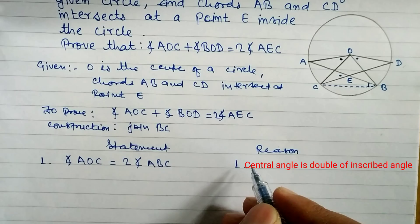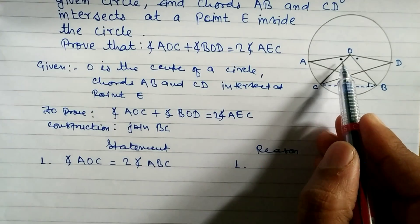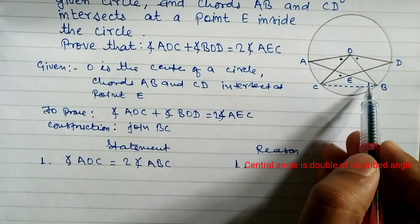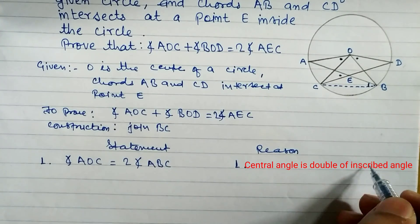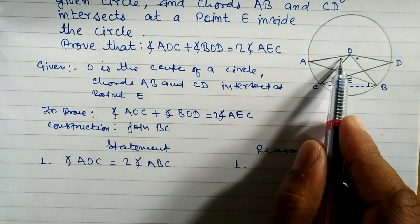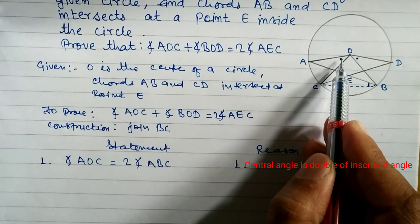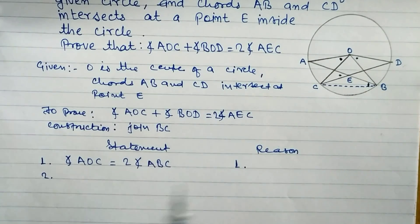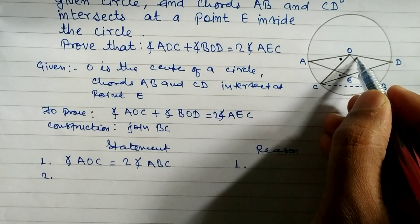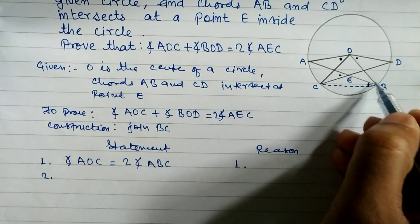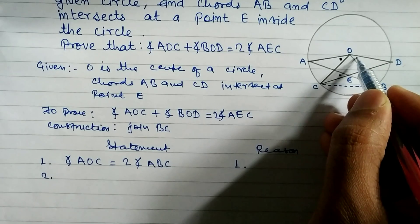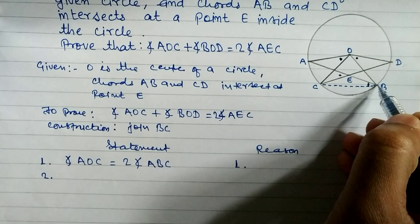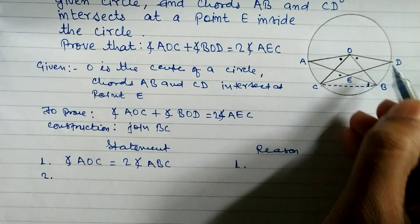The reason is: the angle at the center is double the inscribed angle. You can write the relation between the central angle and inscribed angle. In statement two, angle BOD is a central angle, and angle BCD is the corresponding inscribed angle, both standing on the same base BCD.